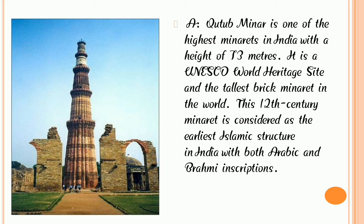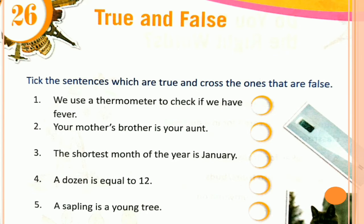In today's lecture we learned about different types of things. Now we are going to do the exercise. Our unit number 26 is named True and False. Children, write with me in your fair book — Unit Number 26: True and False. Take the sentences which are true and cross the ones that are false.